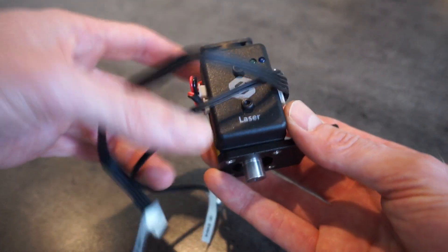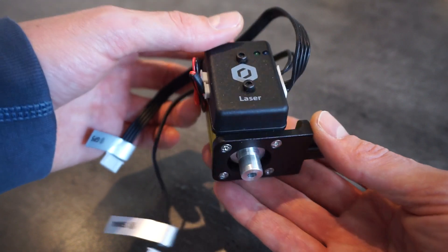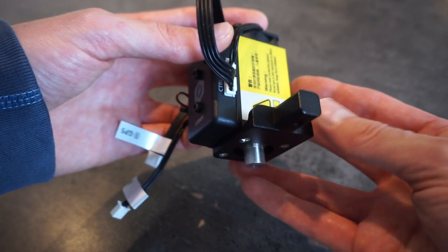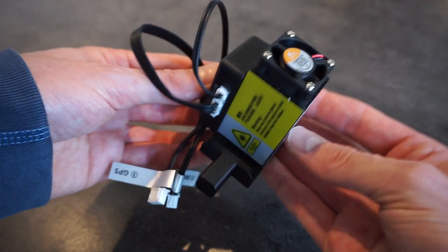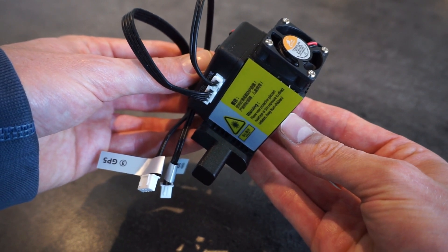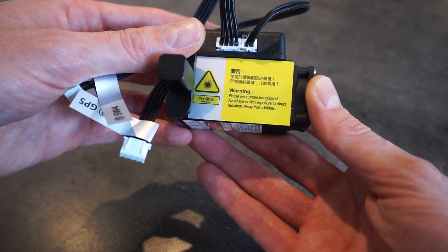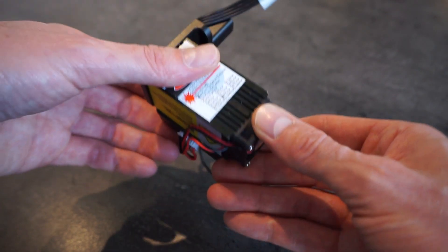The laser module that comes supplied with the Dobot can be used for engraving paper, wood, or similar materials. This is only a 500mW unit, so cutting materials and engraving metals is not possible. The unit is nicely constructed and has a fan for cooling the laser during operation. It's good to see that a pair of safety glasses was provided, since even lasers with limited power pose a serious risk. You only have one pair of eyes after all.